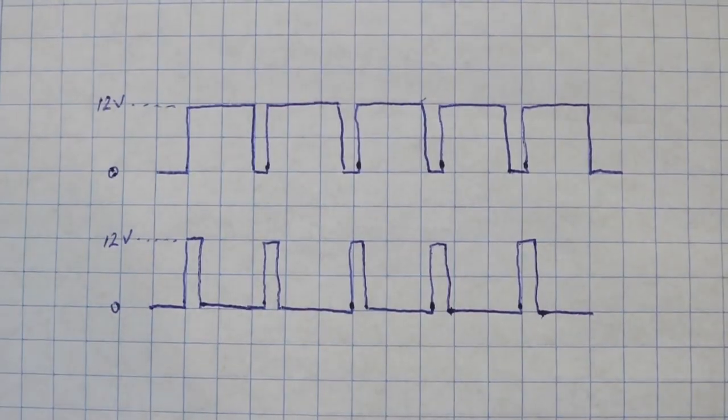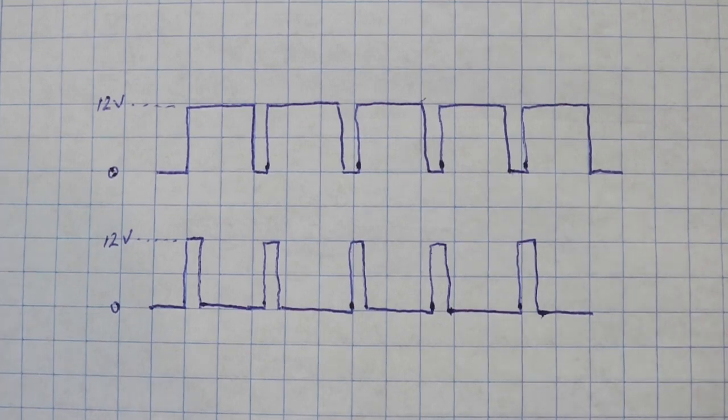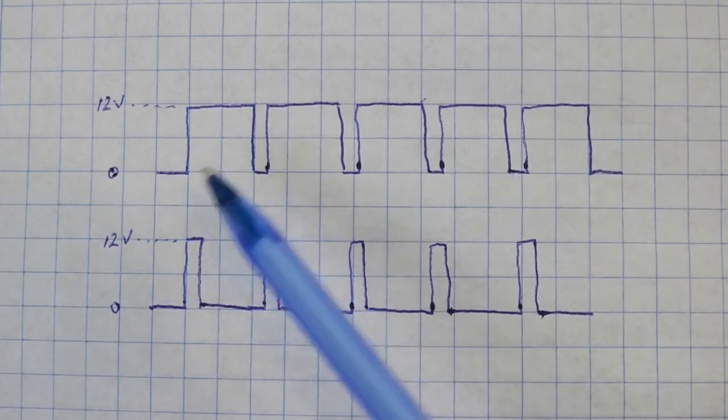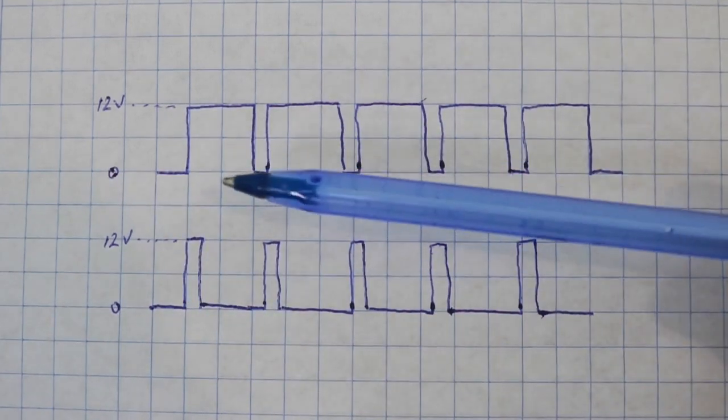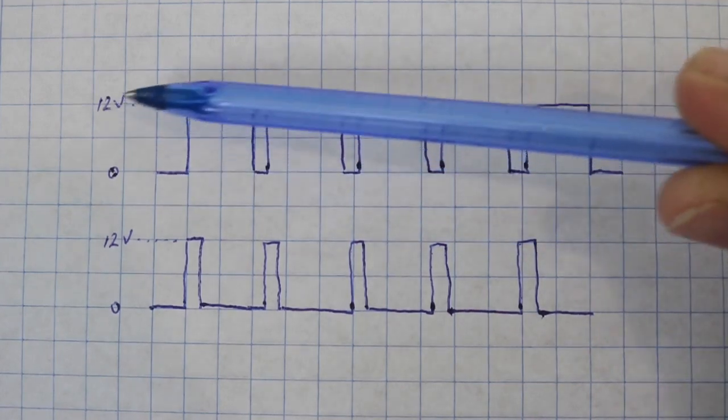As you may know, the 555 timer produces a train of rectangular pulses at its pin 3, something like this. The voltage varies between zero volts up to the applied voltage, in our case 12 volts.